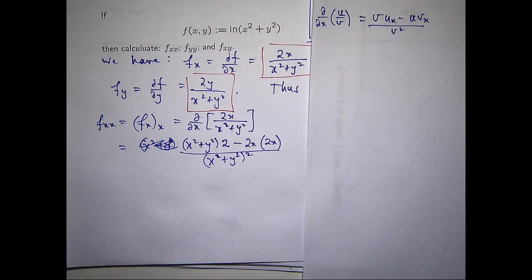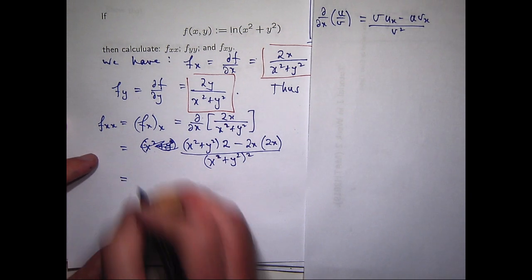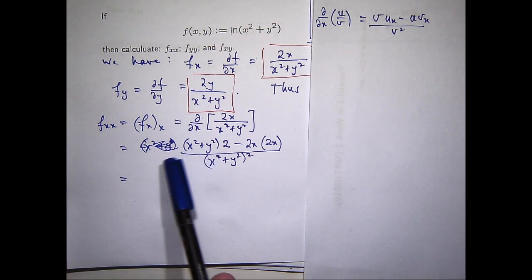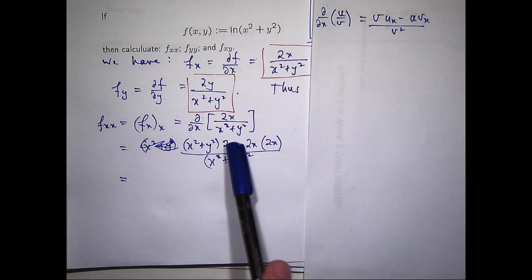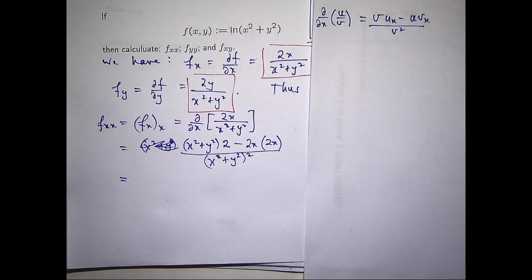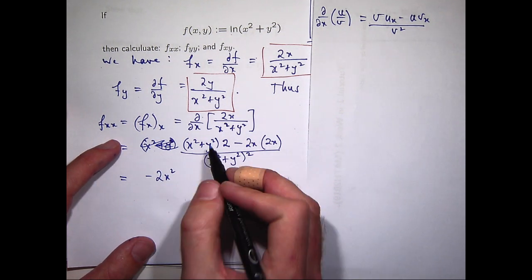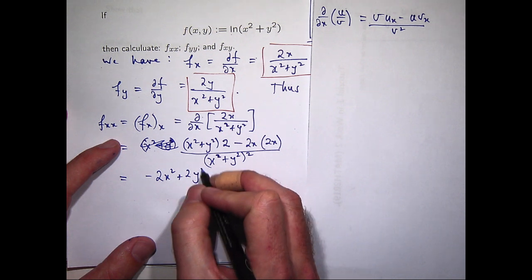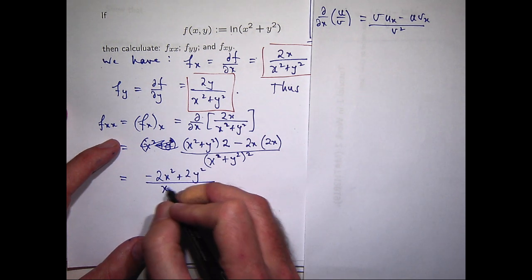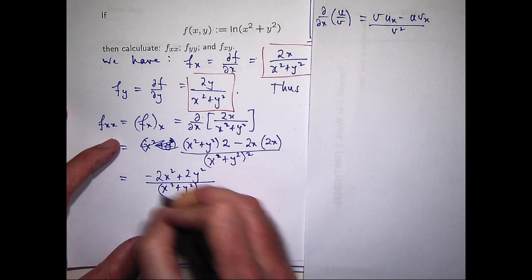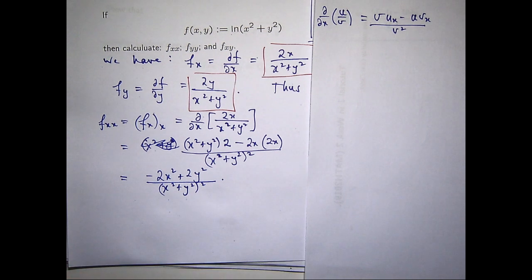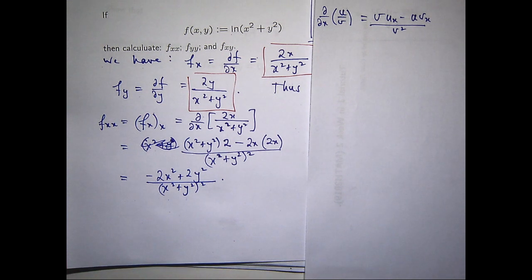Now all we need to do is a little bit of simplification. I'm going to get 2x squared minus 4x squared, which is minus 2x squared, and I'm left with a plus 2y squared on the top. So I should get something like that.